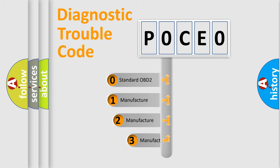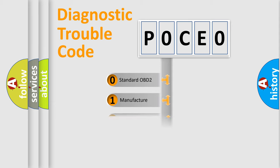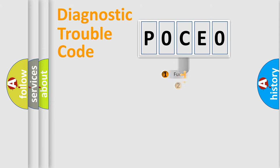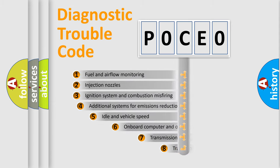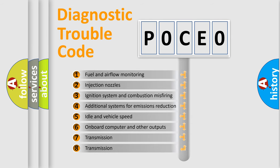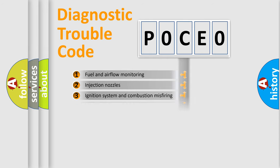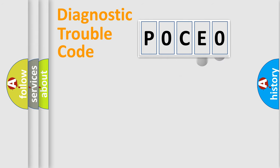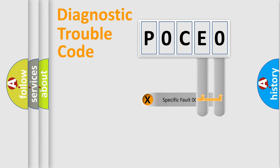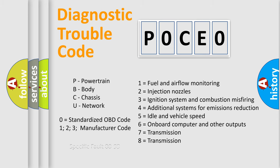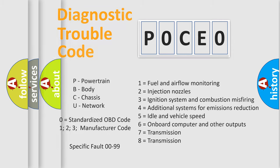If the second character is expressed as zero, it is a standardized error. In the case of numbers 1, 2, or 3, it is a more specific expression of a car-specific error. The third character specifies a subset of errors. This distribution is valid only for the standardized DTC code, where only the last two characters define the specific fault of the group. Such a division is valid only when the second character is expressed by the number zero.